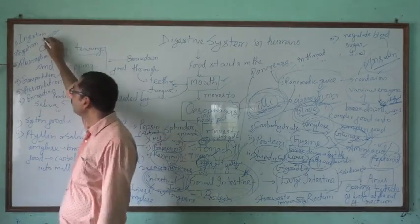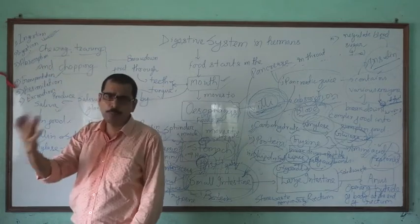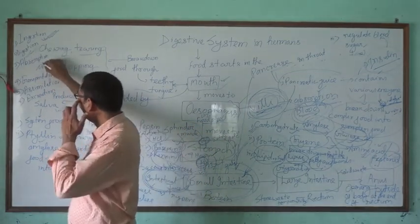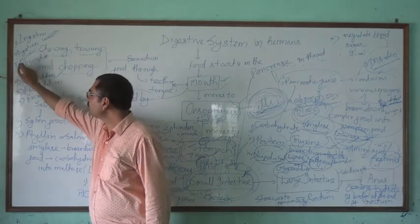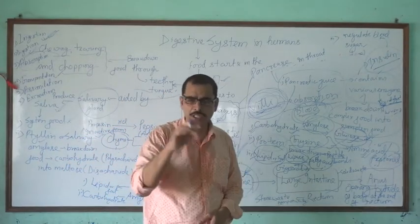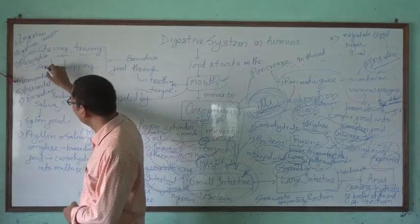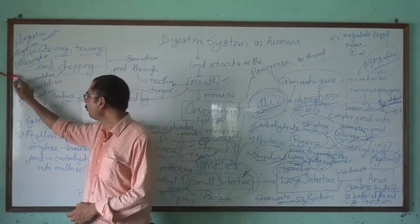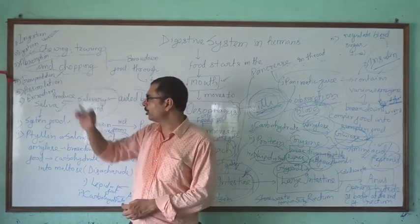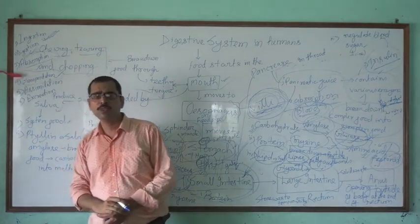Ingestion is the taking in of food through the mouth. Digestion is the process of conversion of complex food material into simpler form with the help of the digestive organs. That digested food reaches the blood and all parts of the body. Mixing of digested food into the blood is called absorption, and the process of the nutrients reaching all parts of the body with the help of the blood is called transportation.